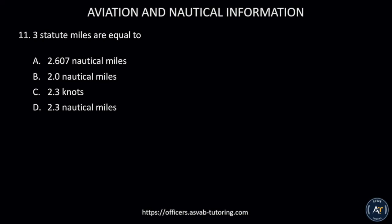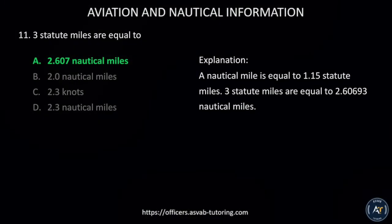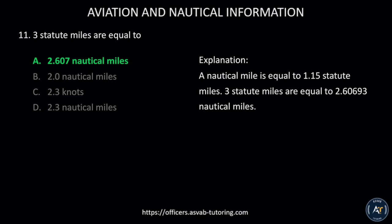Number eleven: Three statute miles are equal to A) 2.607 nautical miles, B) 2.0 nautical miles, C) 2.3 knots, or D) 2.3 nautical miles. The correct answer is A, 2.607 nautical miles. A nautical mile is equal to 1.15 statute miles, so three statute miles are equal to 2.60693 nautical miles.